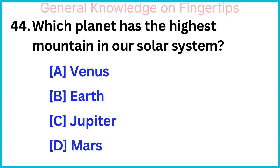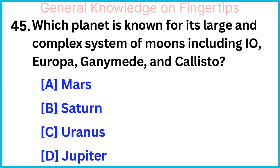Which planet is known for its large and complex system of moons including Io, Europa, Ganymede and Callisto? Jupiter.